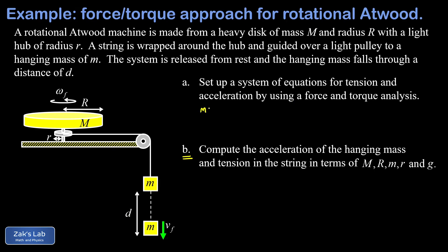We'll start with the little hanging mass — the easy part. It feels two forces: weight mg pointing down and tension T pulling up. Note that T is drawn shorter than mg because the mass is accelerating downward, so T is less than mg. Applying Newton's second law with downward as positive, we get mg minus T equals ma. Choosing this downward coordinate system guarantees that a is positive, which makes the math nicer.